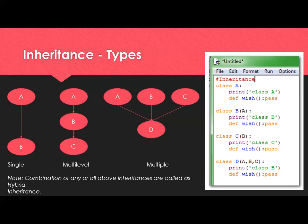Looking at the code snippet on the right side: class A has a print statement and a method with no implementation, using the special keyword 'pass' as a dummy implementation. Class B inherits from class A and has the same print and method. Class C inherits from B with one method and one print statement. Class D is the example for multiple inheritance — it inherits from A, B, and C. If you consider only class A and class B, it is single-level inheritance. Class A, B, C form multi-level inheritance. Class D represents multiple inheritance.